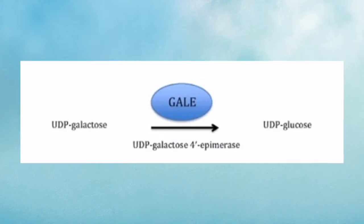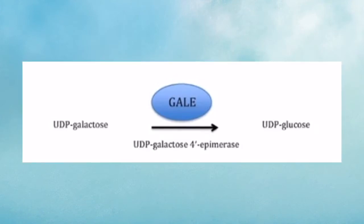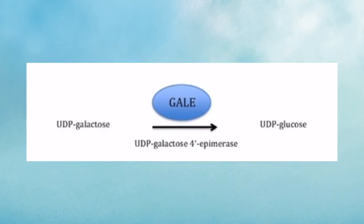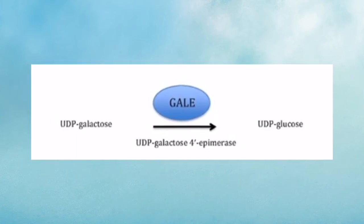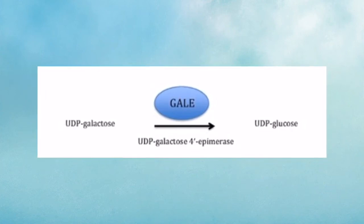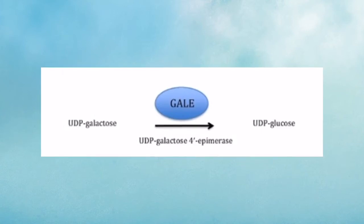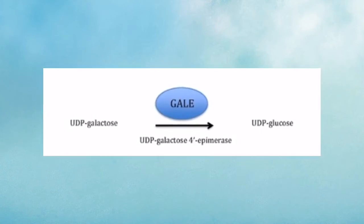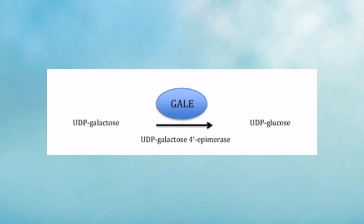Lastly, UDP-galactose undergoes epimerization to form UDP-glucose. This is catalyzed by the enzyme UDP-galactose-4-epimerase. This reaction is reversible, so that UDP-galactose and UDP-glucose are freely interconvertible. This in fact permits the biosynthesis of galactose from glucose even when galactose is excluded from the diet.